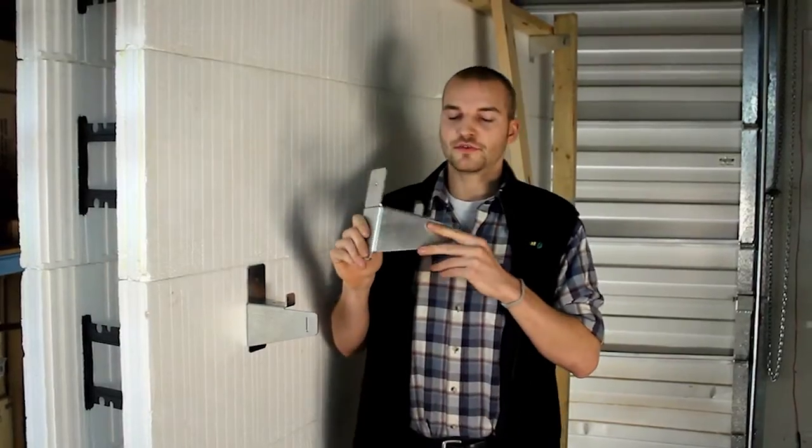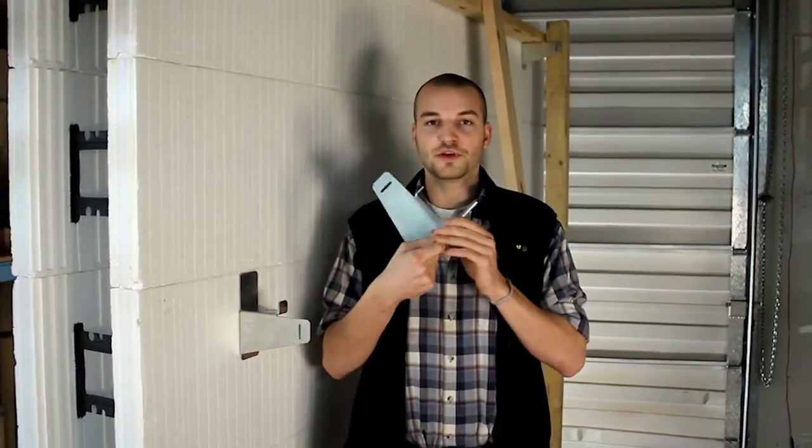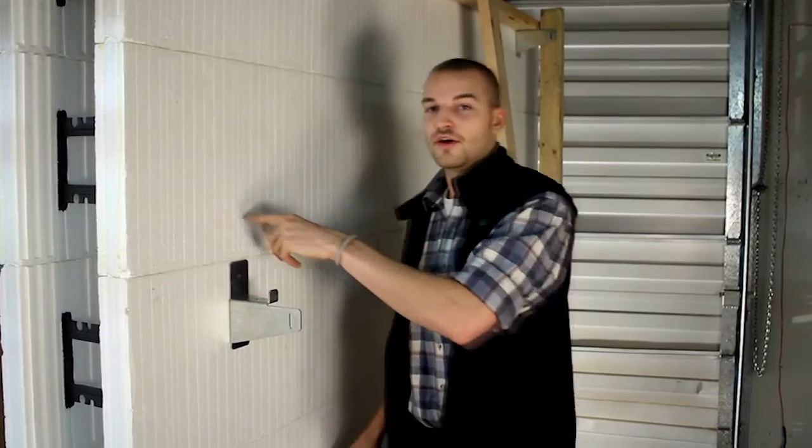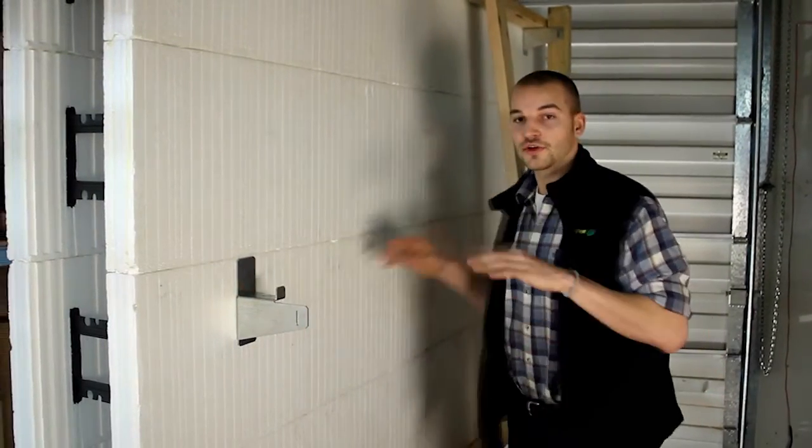So the system is based around these metal brackets that we call Zonts. Once the Zonts are screwed into the web of the ICF wall, they have a cavity here that will accommodate for a horizontal whaler and for a vertical strong back.